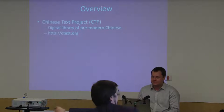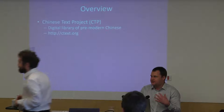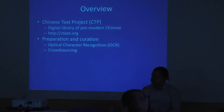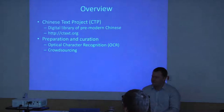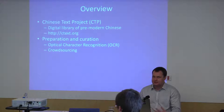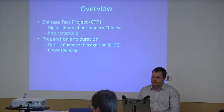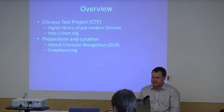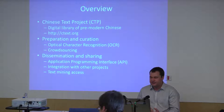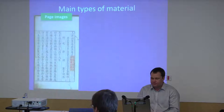It's an online project with web address ctext.org. I'm going to start by introducing some of the most important types of data in the system, then make some comments about preparation and curation of data — where our actual data comes from and how it's maintained. This will primarily involve a quick discussion of optical character recognition for these materials, how we get better results with this, and crowdsourcing, which is very important to how this database is maintained. Lastly, I'll cover dissemination and sharing of the data, particularly how we use an application programming interface to export data in real time to allow integration with other projects and use in text mining research and teaching.